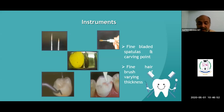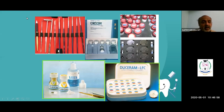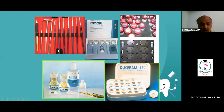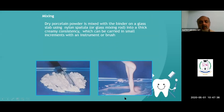We have brushes of various thicknesses for use with ceramic. This is the perfect kit: you have the blades, spatula, condenser, and various sizes of brushes. This is the Vita company ceramic kit. On the right-hand side you can see various powders of ceramic in different shades, which you can mix and match.